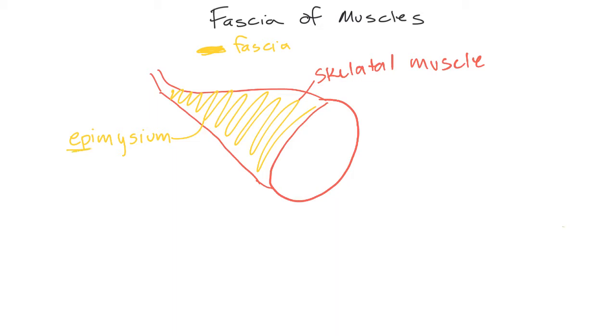And they are covered in layers of fascia. Okay, so we'll do yellow for our fascia. Okay, and the outermost layer of fascia is the epimysium. Okay, epi means outside, right?